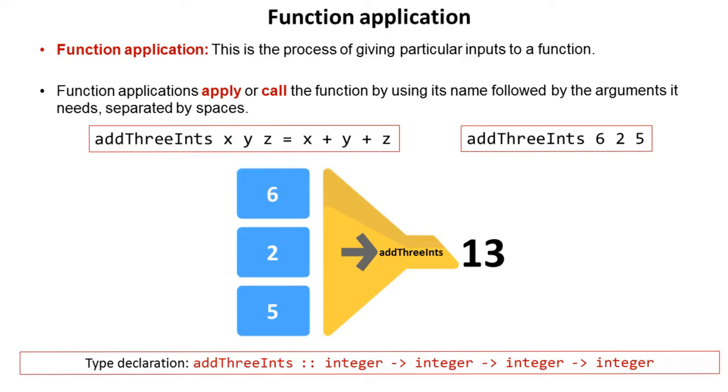You start with a function name and then you supply it the data types that the function is taking in: an integer, an integer, an integer, and finally the data type the function returns, which itself is an integer.